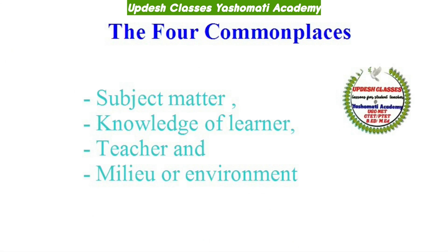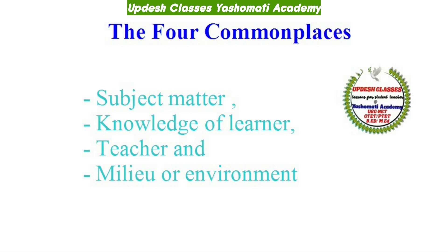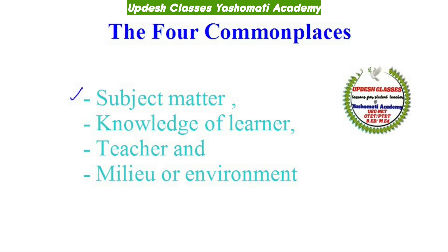जब Schwab ने paper publish किया — जिसका नाम था 'The Practical' — उसमें उन्होंने चार common places define किए। Dictionary में common place का मतलब होता है जो चीज़ बहुत आम या dull हो, लेकिन इस model में common places का मतलब है: subject matter, learner, teacher और value। ये चार common places यह define करती हैं कि जब कोई अध्यापक curriculum decide करता है — क्या पढ़ाया जाए, किस तरह पढ़ाया जाए — ताकि learner अपनी capacities develop कर सके।